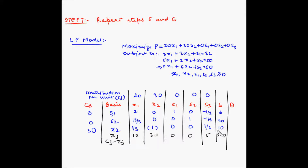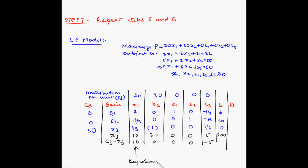Now let us find the net evaluation or net profit for adding a unit of each variable. Cj minus Zj: 20 minus 10 is 10, 30 minus 30 is 0, 0 minus 0 is 0, 0 minus 0 is 0, 0 minus 5 is minus 5. Here again we have a positive value of 10, which means there is further scope for improvement. So this becomes our key column and X1 becomes our entering variable.